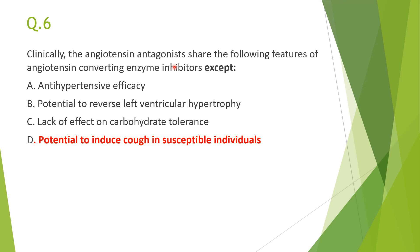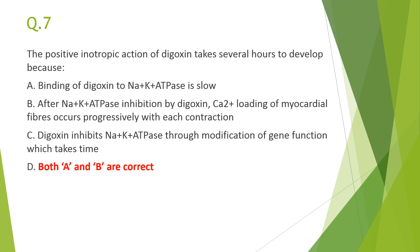The lack of cough and angioedema is the advantage of losartan-type drugs or ARBs. Next: positive inotropic action of digoxin takes several hours to develop — option D is correct, both A and B. Digoxin inhibits sodium-potassium ATPase in myocardial cells, but its action takes several hours because binding to the sodium-potassium ATPase is very slow, and calcium loading of myocardial fibers occurs progressively with each contraction, not rapidly. That is why a loading dose is given first.